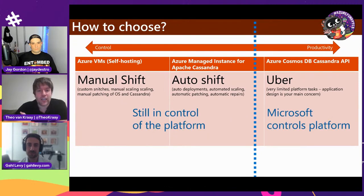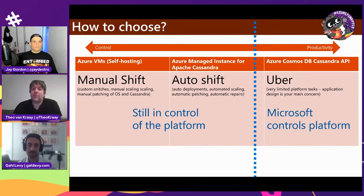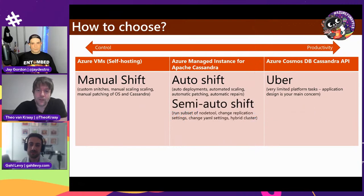With managed instance, you're still in control of the platform configuration aspects — there might be more automation, but you're still in control. With Cassandra API, Microsoft really controls all of the platform-level stuff.